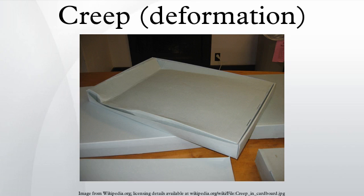An example of an application involving creep deformation is the design of tungsten light bulb filaments. Sagging of the filament coil between its supports increases with time due to creep deformation caused by the weight of the filament itself. If too much deformation occurs, the adjacent turns of the coil touch one another, causing an electrical short and local overheating, which quickly leads to failure of the filament. The coil geometry and supports are therefore designed to limit the stresses caused by the weight of the filament, and a special tungsten alloy with small amounts of oxygen trapped in the crystallite grain boundaries is used to slow the rate of creep.